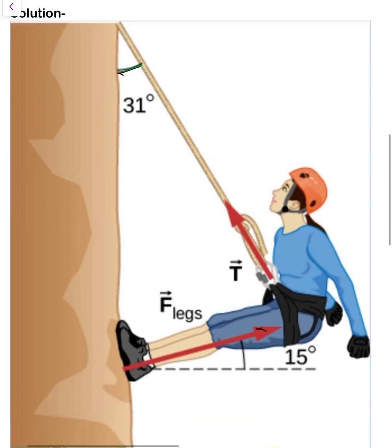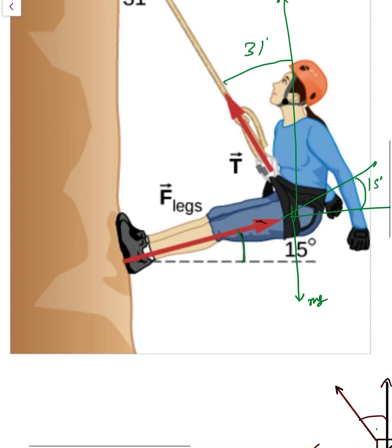Now see, weight mg is downward. If you see this one, that is 15 degrees, simply 15 degrees. This one is 15, so that is also 15. And now a vertical line. If that one is 31 degrees, that is 31. So make the free body diagram very carefully.